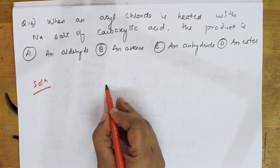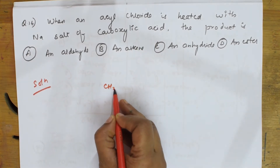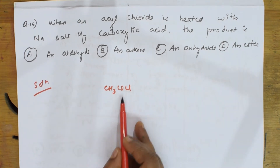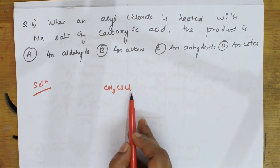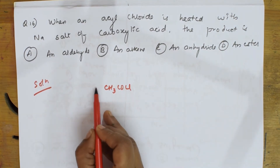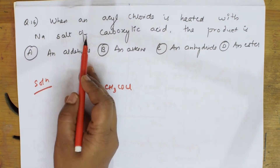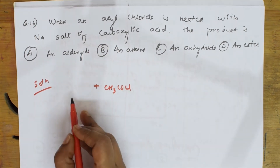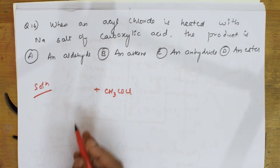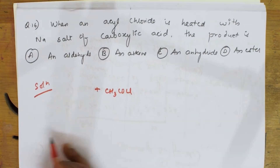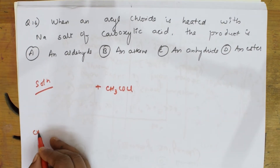Acyl chloride — what is acyl chloride? CH₃COCl. This is the acyl group. Now, what did they say? It is heated with sodium salt of carboxylic acid. Basically, carboxylic acid — that is your acetic acid.